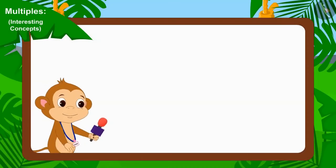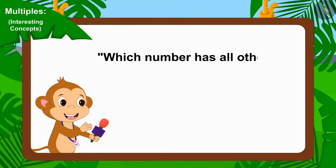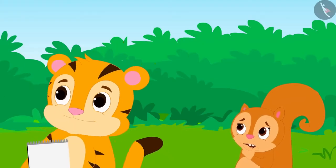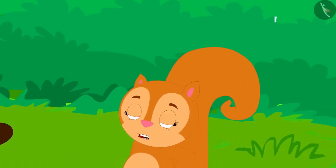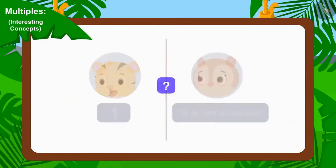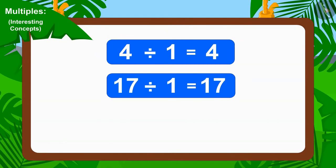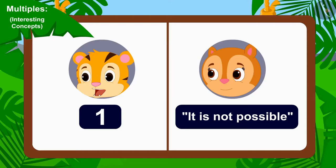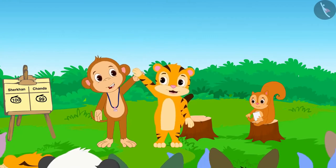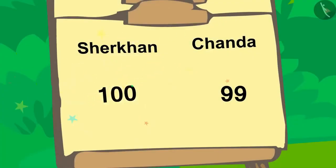Now let us see what the last question of the competition is. The next question is: Which number has all other numbers as its multiples? Children, can you tell whose answer is correct? We can divide any number by one. Therefore, all numbers are multiples of one. Sheer Khan's answer is absolutely correct — that all numbers are multiples of one.